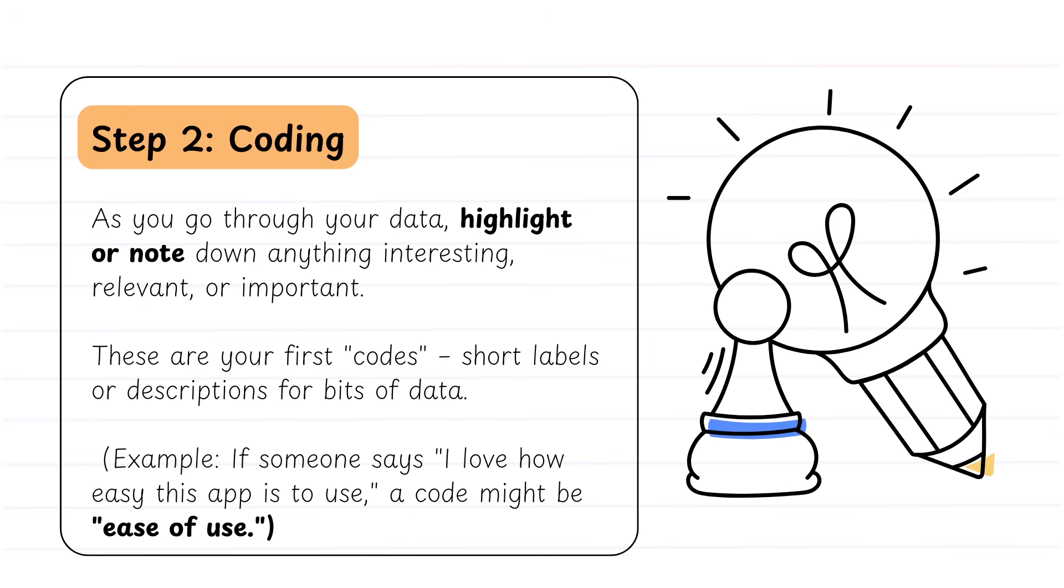Now these codes should be relatively short labels or descriptions of bits of data. So for example, if someone said, I love how easy this app is to use, you might highlight those particular groups of phrases there and say that's an ease of use code. You go back through your data. If this appears again, you're going to label that the same in a different transcript. There are different ways to do this. You might use colors, you might have symbols, or if you're using software like NVivo, you might use that system to code your data. So you want to go through all of your transcripts, all of your information, and code individual bits of data.